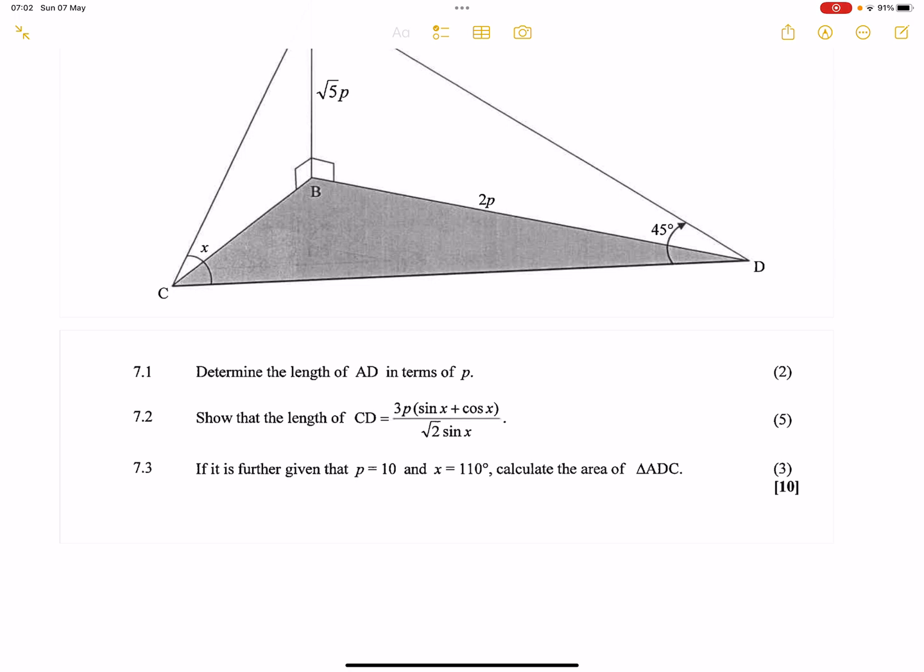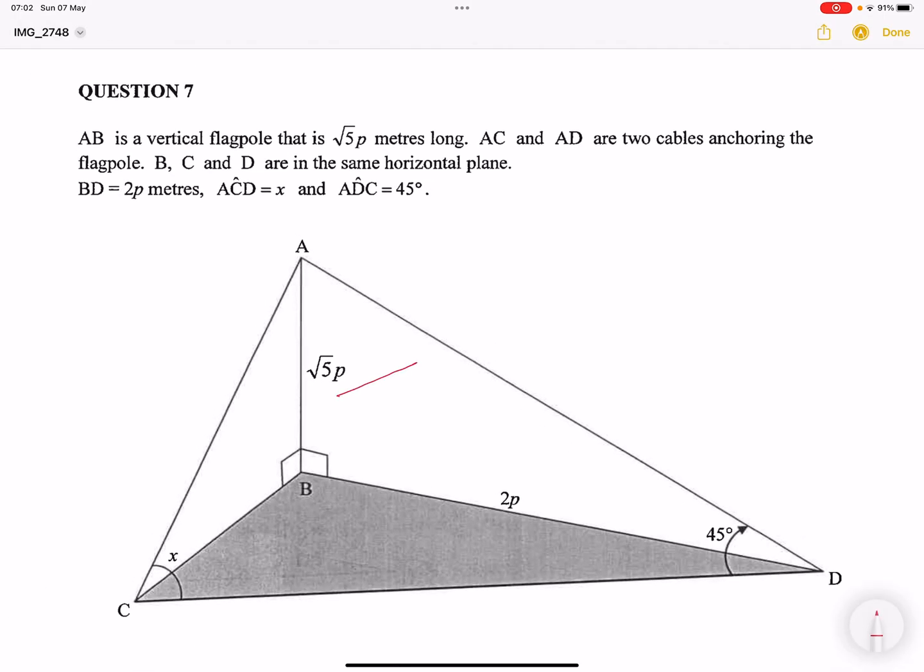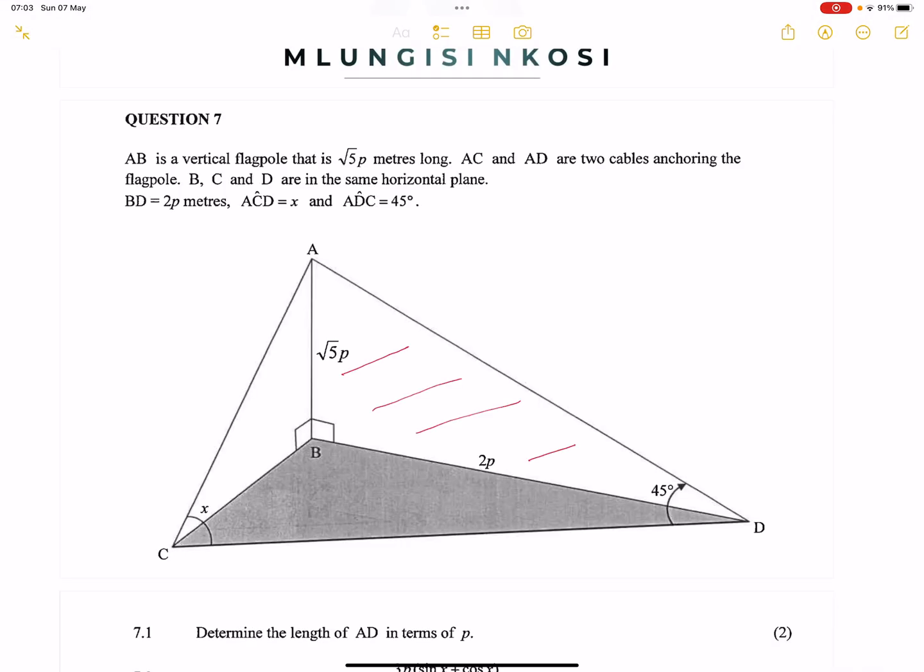They say to us, determine the length of AD in terms of P. Now, obviously, to find AD in terms of P, we're going to have to work within this triangle over here. I want you to just think about it there. So I'm looking for the length of AD, and I've got a 90 degree triangle. We can use Pythagoras, isn't it? Note that that 45 degrees is not within that triangle. Please be very careful about that. That 45 degrees is actually in the outer triangle.